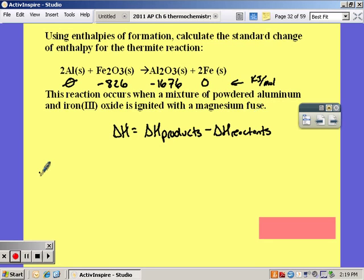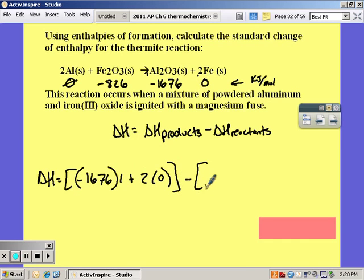So now we can solve for the delta H of reaction. It's got to be products minus reactants. So it's negative 1676 times the coefficient, which in this case is 1, plus our iron. We have 2 moles and each of those have a value of 0. So that's our products minus our reactants, 2 times 0, plus negative 826 times 1. Solving that out, you get negative 850 kilojoules per mole.